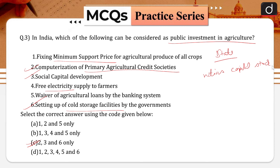MSP — minimum support price — provides a market intervention mechanism to work as an insurance policy for farmers to save them from price falls. It is not helping in enhancing productivity in the agriculture sector. Thus, fixing the MSP for agricultural produce of all crops does not add to national capital stock or lead to higher productivity. Therefore, the first statement is not correct.